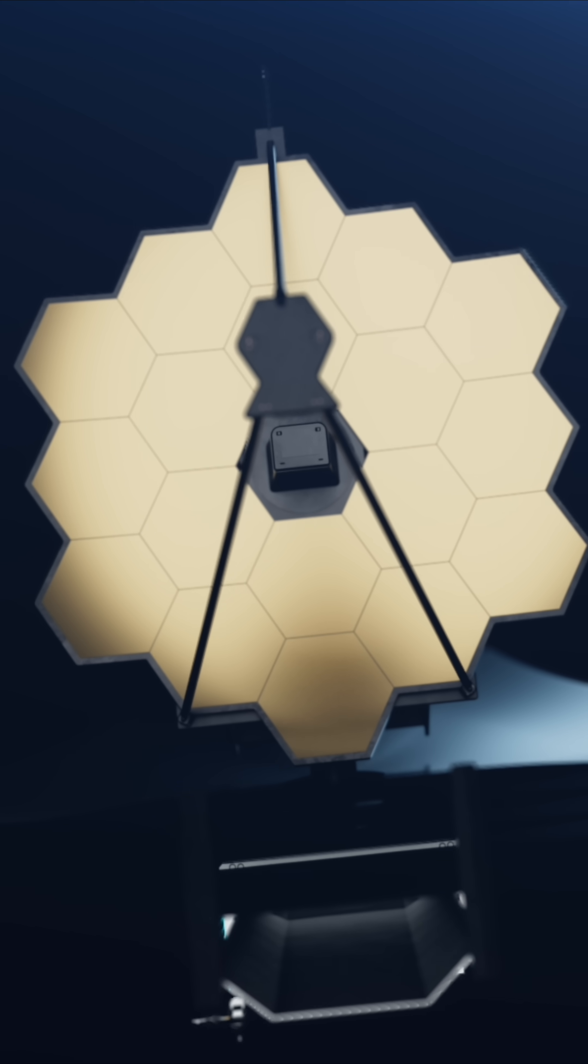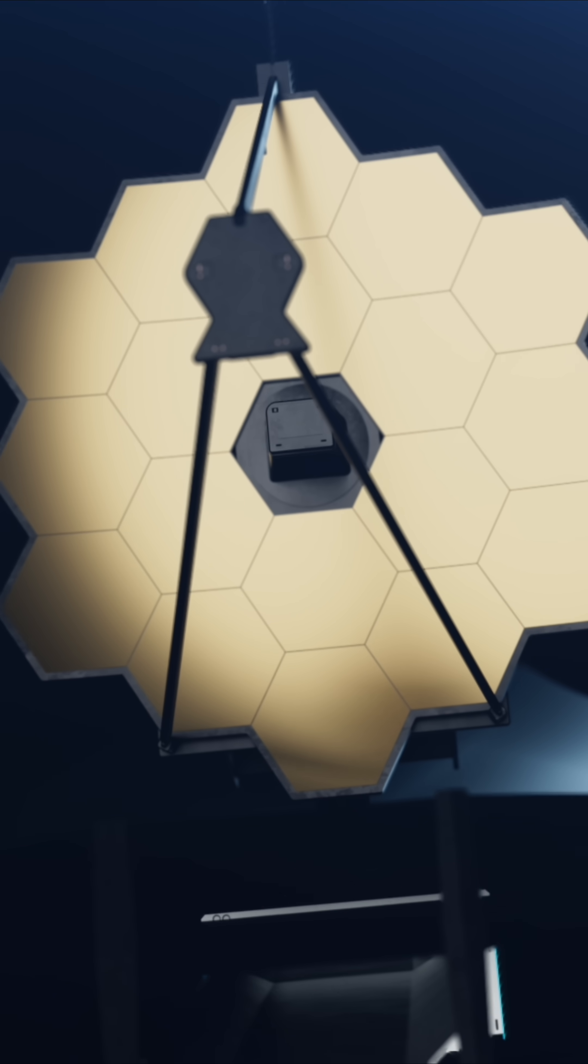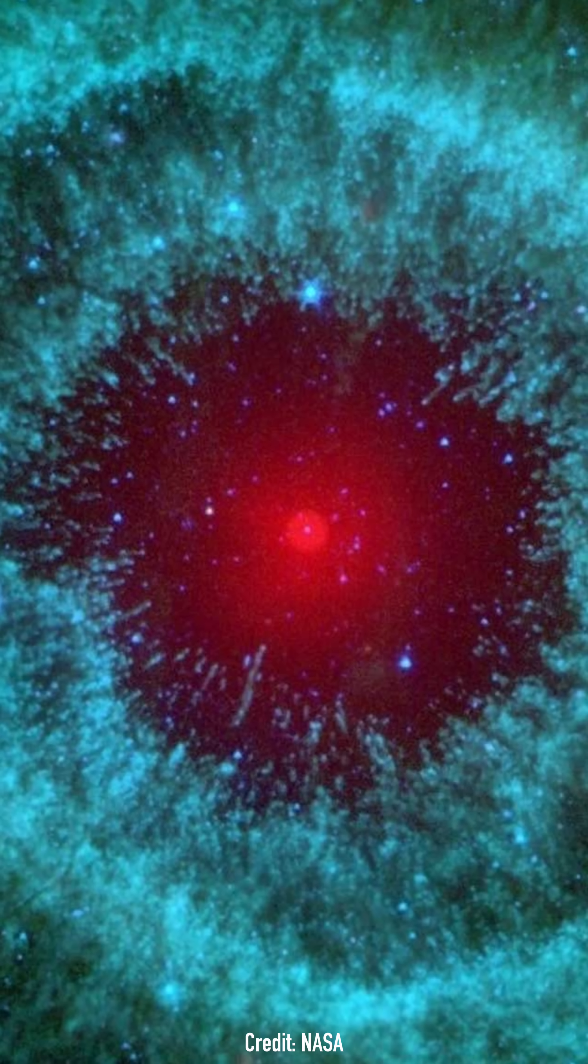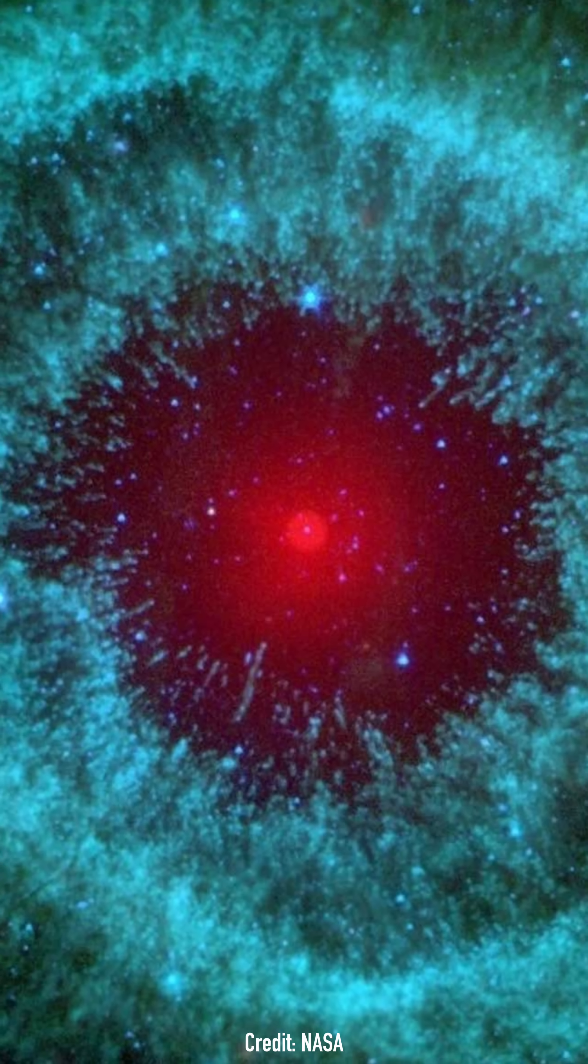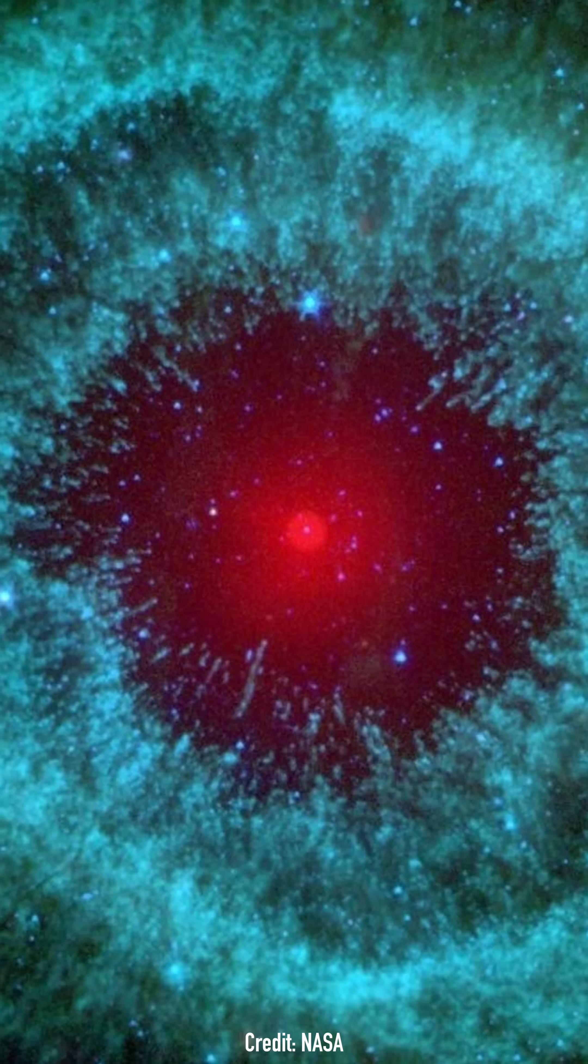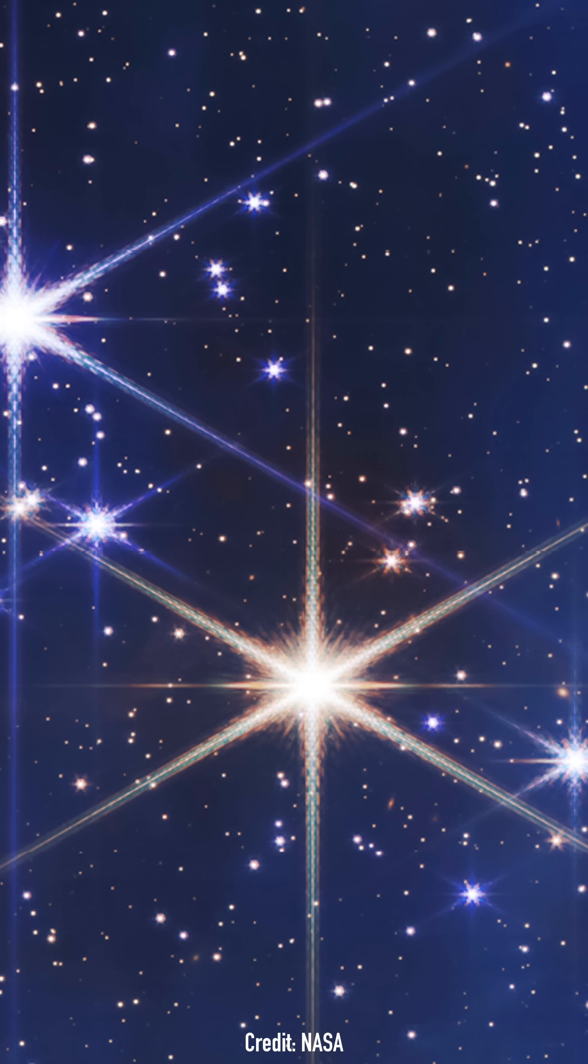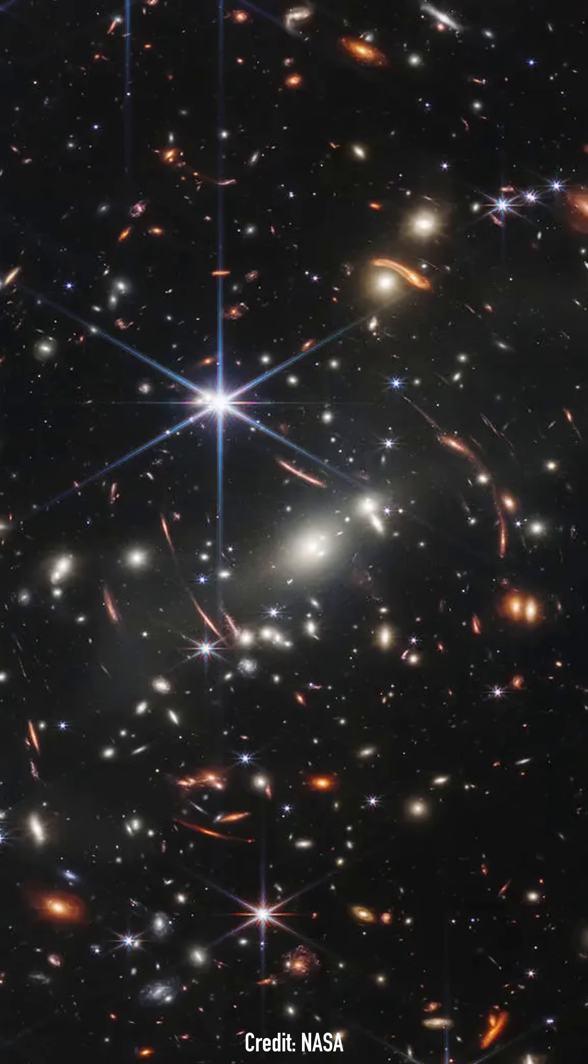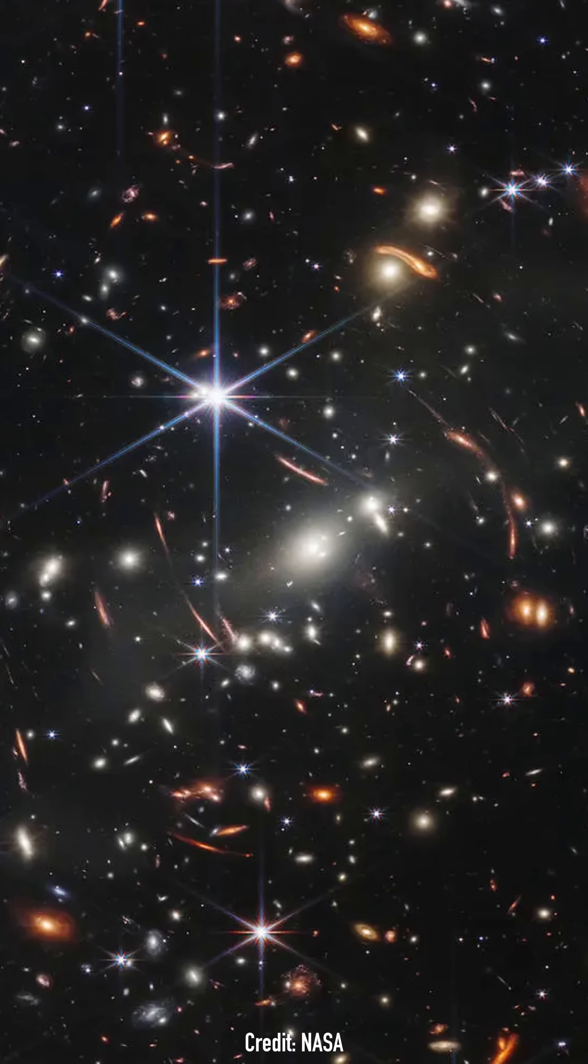Unlike visible light telescopes, JWST mainly detects infrared light. This helps it see through cosmic dust clouds where stars and planets form, stellar nurseries, revealing secrets hidden from older telescopes. Its discoveries help us understand how stars, galaxies, and even planets like our own form and evolve.